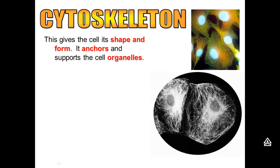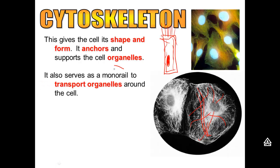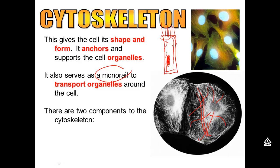The cytoskeleton gives the cell its shape and form. If an animal cell is supposed to be rectangular, as in the trachea, the cytoskeleton will help give it that shape. If the cell is supposed to be round, as in the egg cell, it will hold that shape. The cytoskeleton also anchors, supports, and keeps in place all of the different organelles. If you look at a cross-section of a cell, it would look very much like a monorail system, because the cytoskeleton transports and helps move all the organelles around the cell.